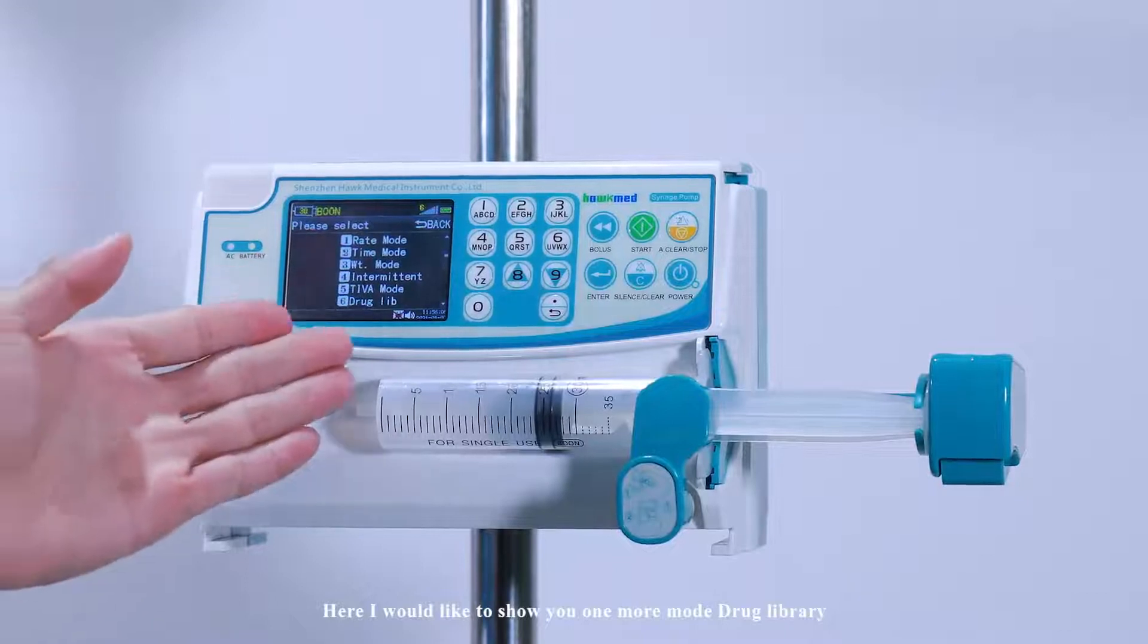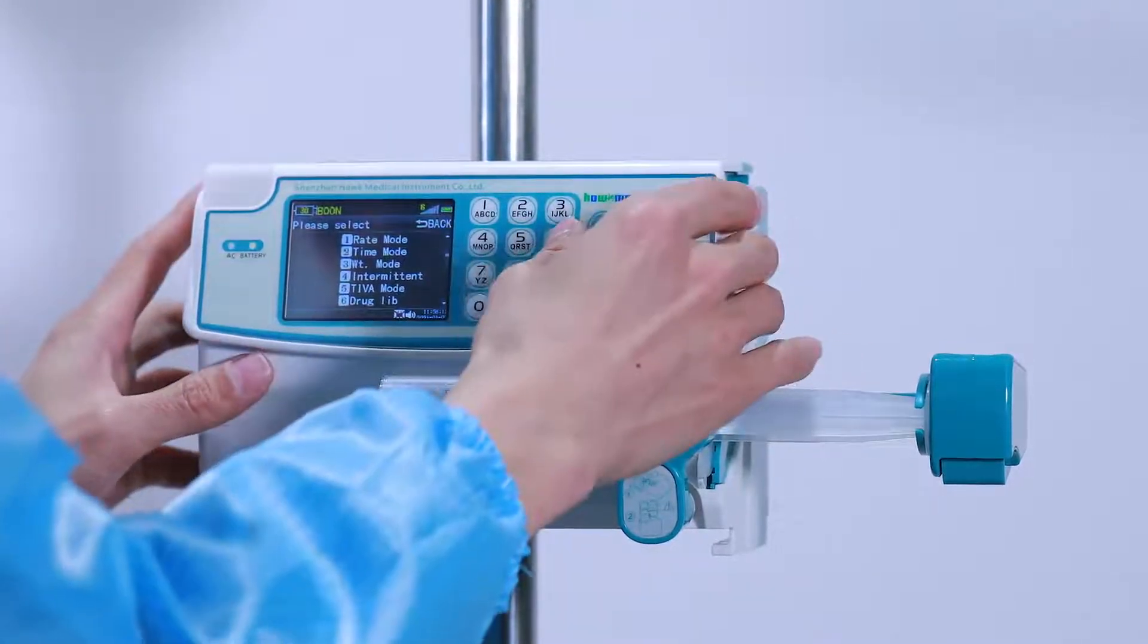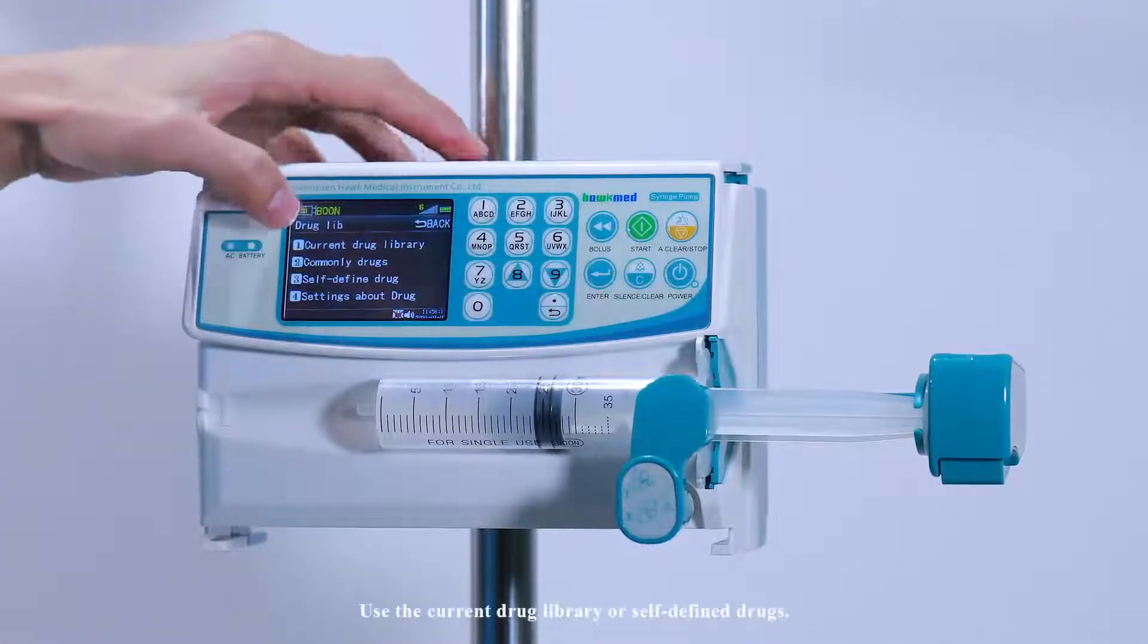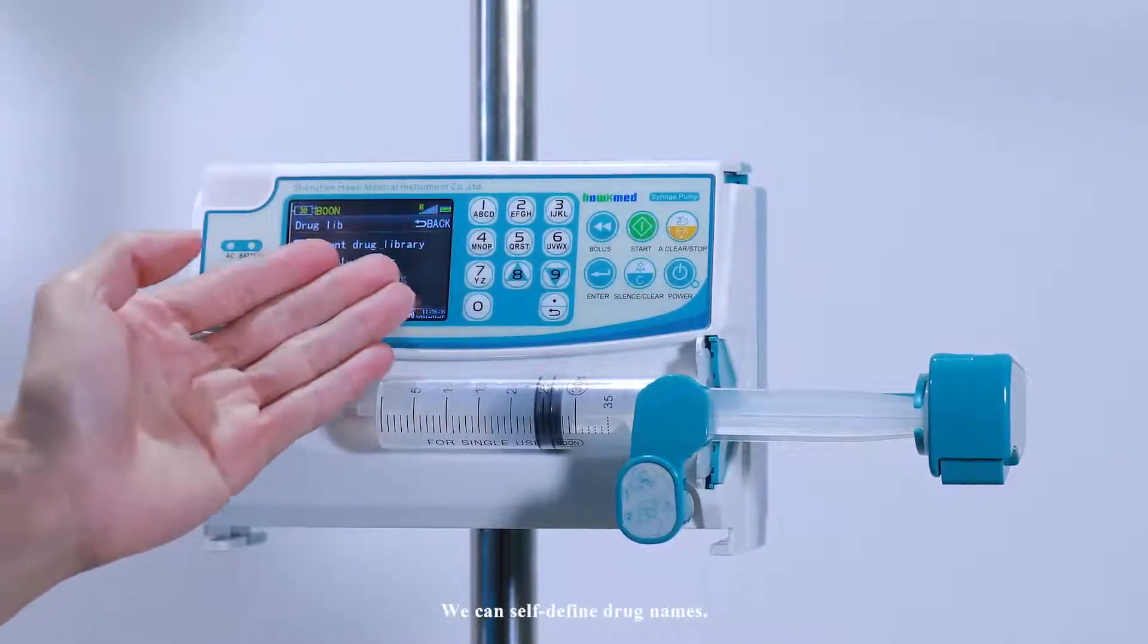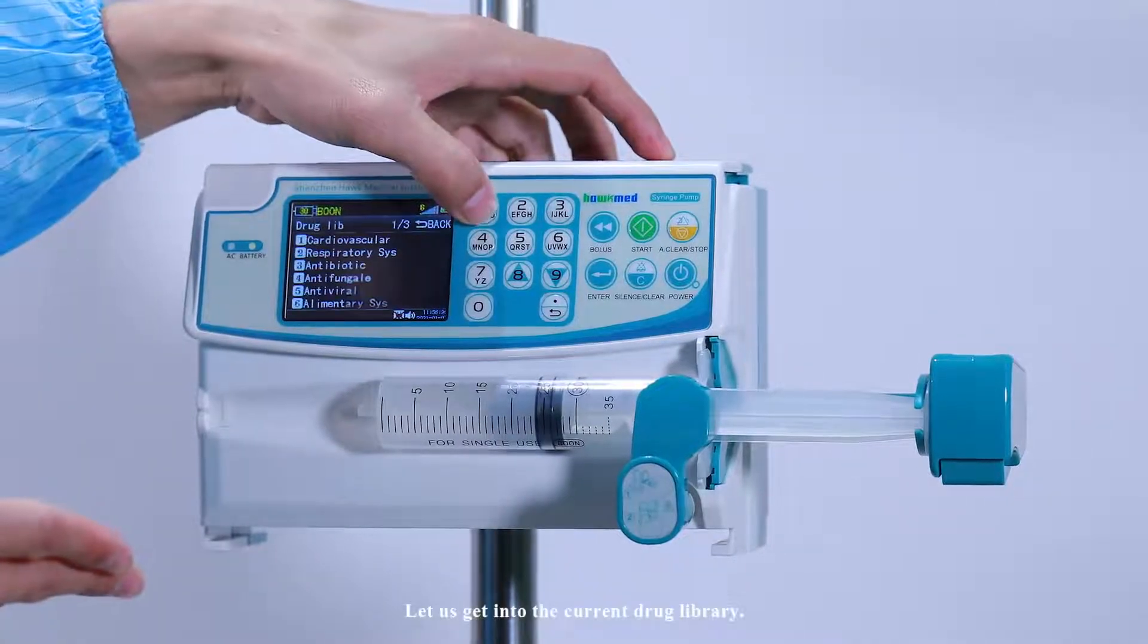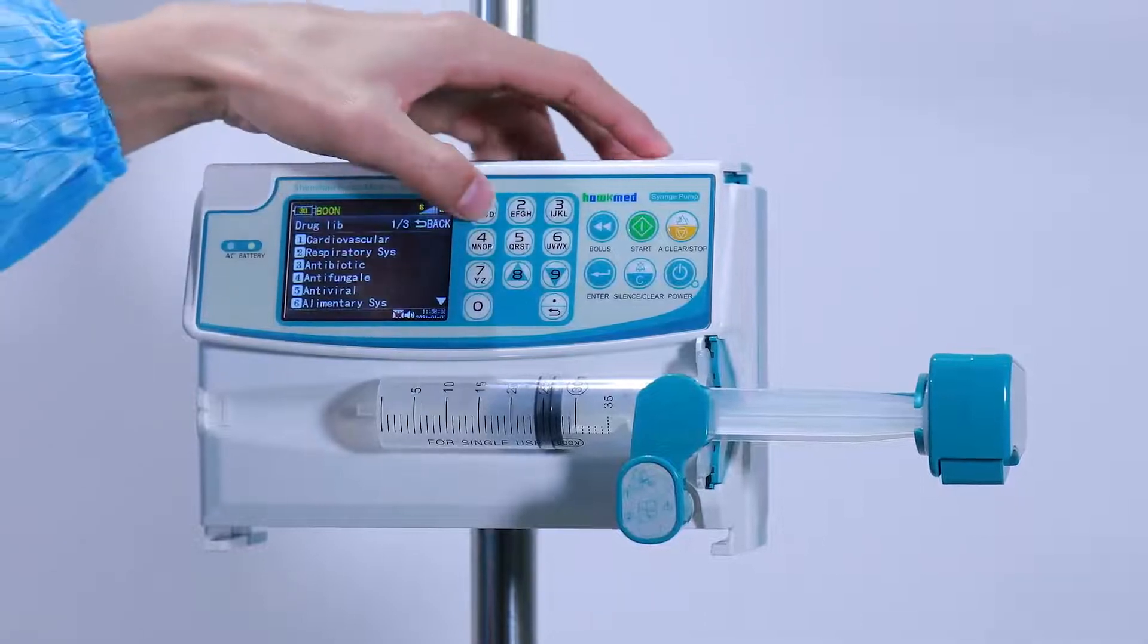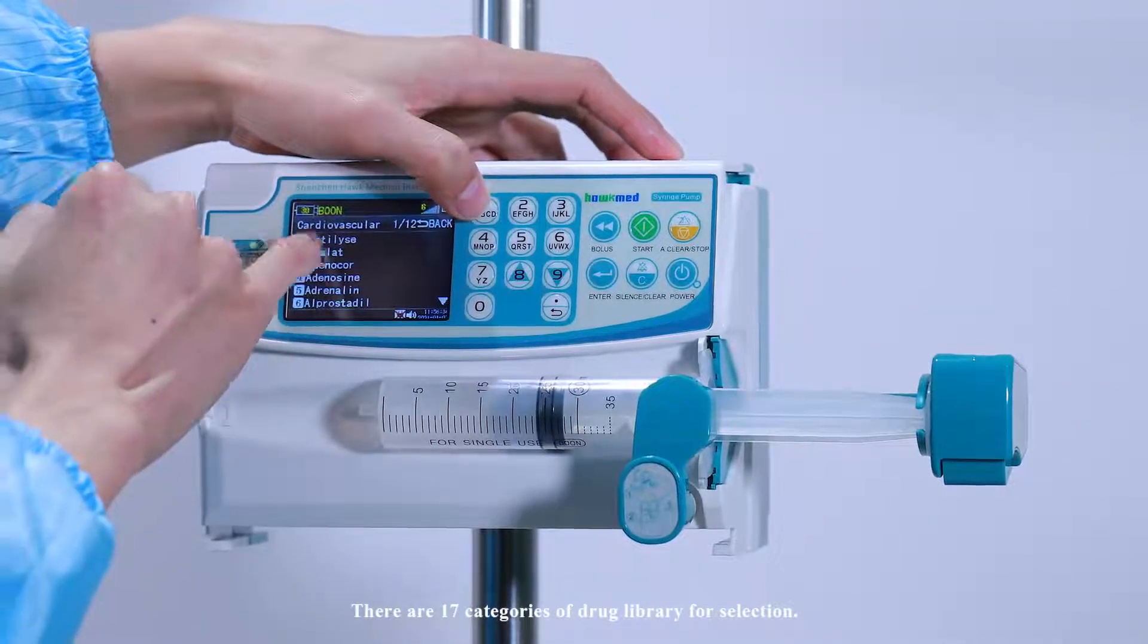Here I would like to show you one more mode, drug library. Press 6. Use the current drug library or self-defined drugs; we can self-define drug names. Let us get into the current drug library. There are 17 categories of drug library for selection.